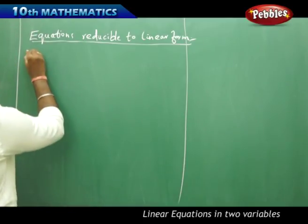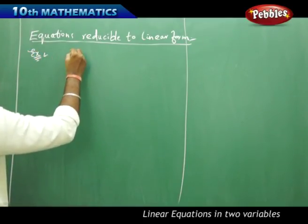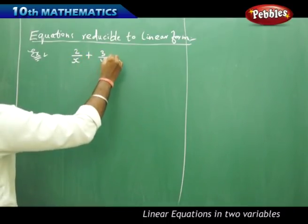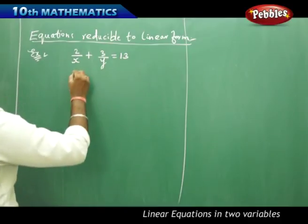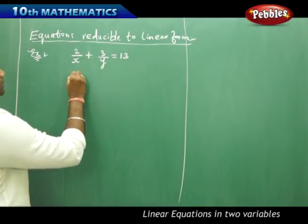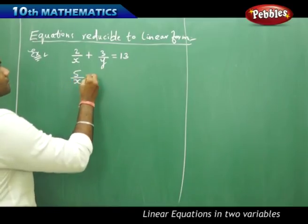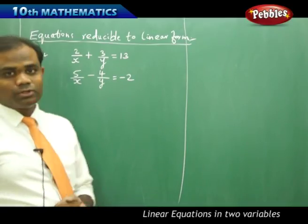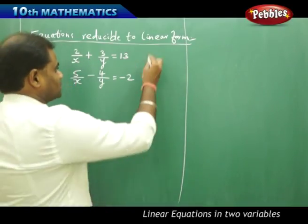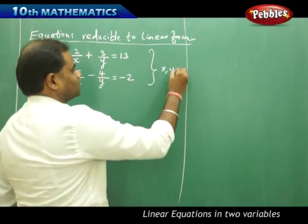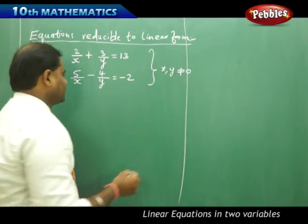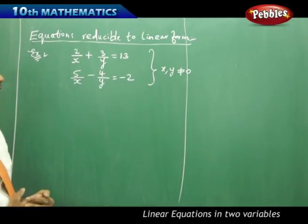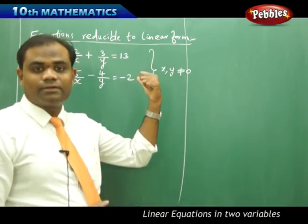For example, take the problem: 2/x + 3/y = 13, and a second equation: 5/x − 4/y = −2. These are the two equations with the condition that x and y are non-zero, because if x and y are zero — being in the denominator — the whole equations would be undefined. Therefore, we have non-zero solutions for this kind of example.